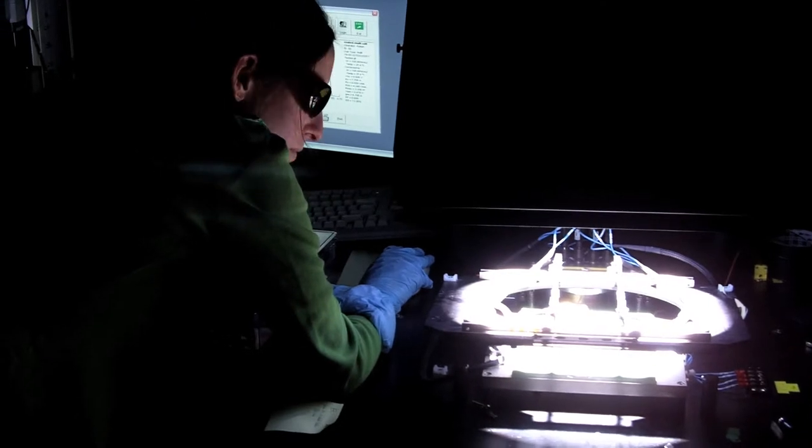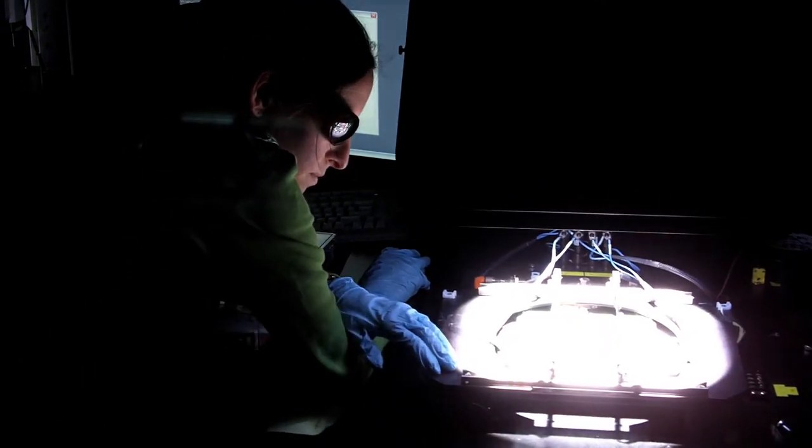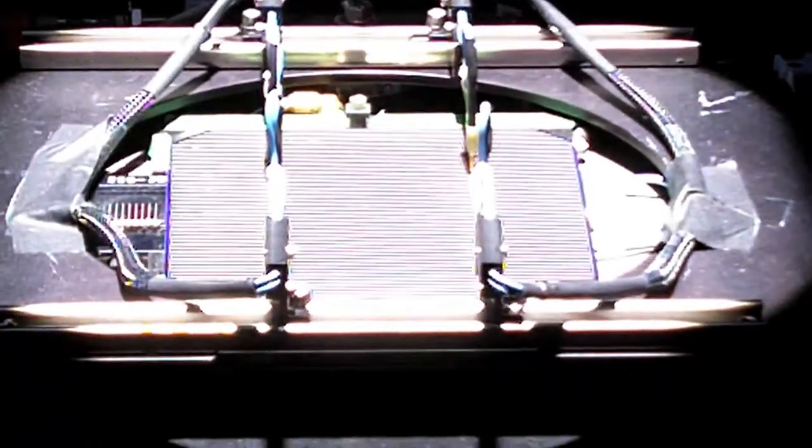To build solar panels, the lab's scientists first sort through the solar cells supplied by various manufacturers. Scientist Teresa Christian subjects the solar cell to simulated sunlight to measure its performance.